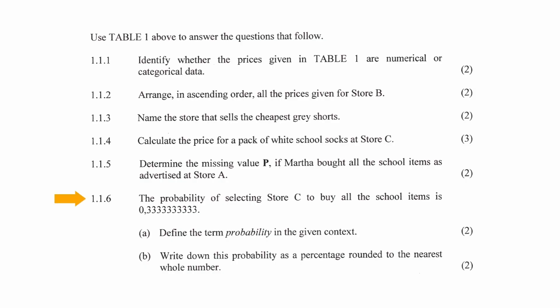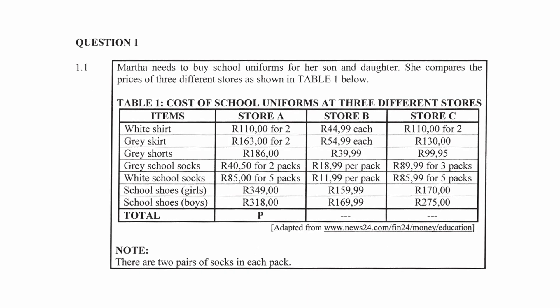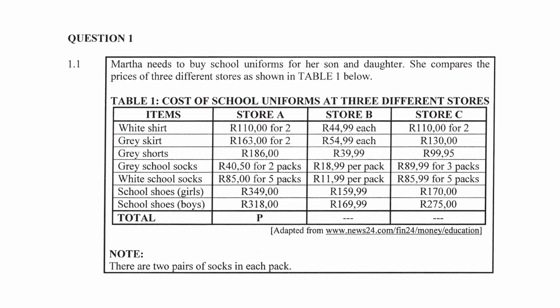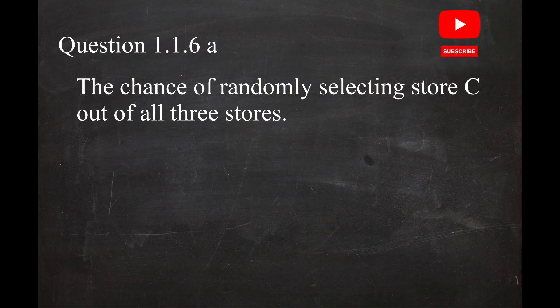In question 1.1.6, it is stated that the probability of selecting Store C to buy all the school items is 0.3 recurring. In question 1.1.6A, you are asked to define the term probability in the given context. The context part is important — just giving the general definition won't get you the marks. You have to give the definition with reference to the given context. Here, probability can be defined as the chance of randomly selecting Store C out of all three stores.